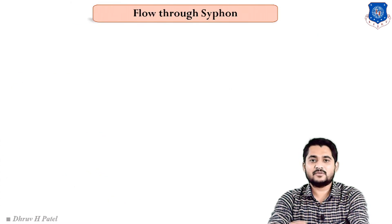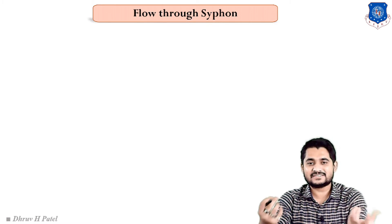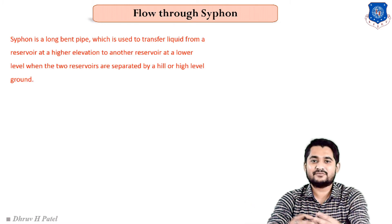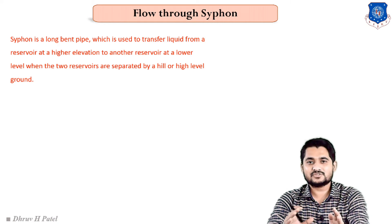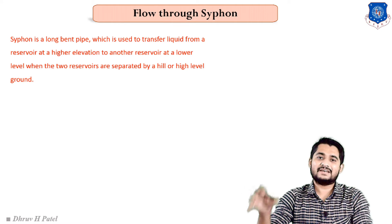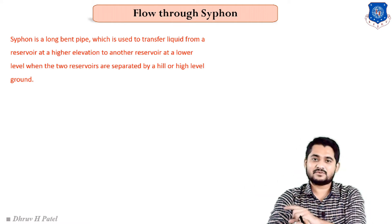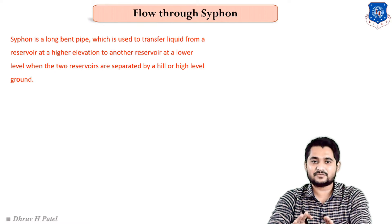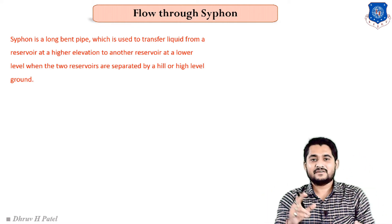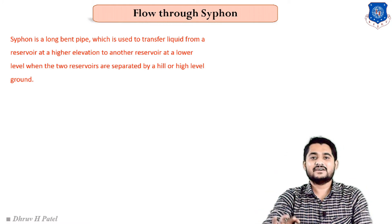Our next concept is flow through a siphon. A siphon is a practical instrument. First of all, a siphon is a long bent pipe which is used for the transfer of liquid from a higher elevation to a lower elevation when the two reservoirs are separated by a hill or any high elevated area.